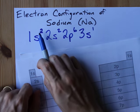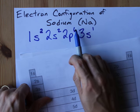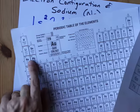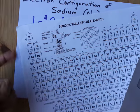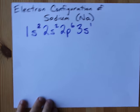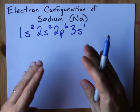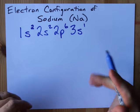Now you'll notice that 2 plus 2 plus 6 plus 1 is 11 electrons, because sodium is the 11th element. And so its neutral atom needs 11 electrons. This is the full electron configuration for sodium. Done!